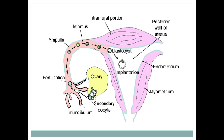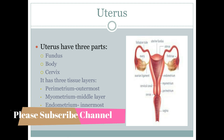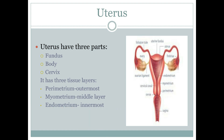After fertilization, the zygote moves to the ampulla and starts its mitotic divisions. In the isthmus it continues dividing, and finally reaches the uterus as a blastocyst. Now that the blastocyst has reached the uterus, let's start discussing the uterus. It is a thick-walled muscular organ capable of expansion to accommodate a growing fetus, connected distally to the vagina and laterally to the uterine tubes.